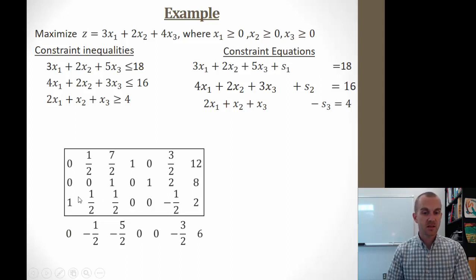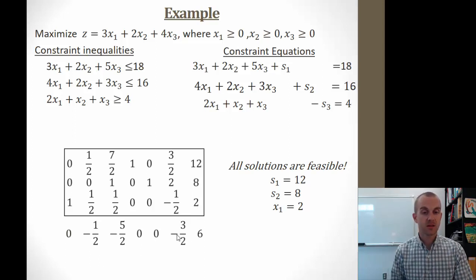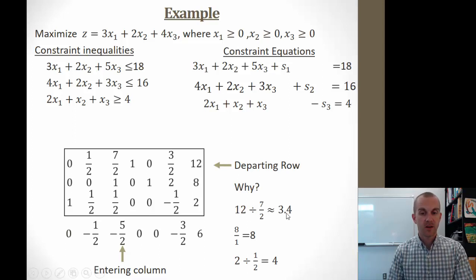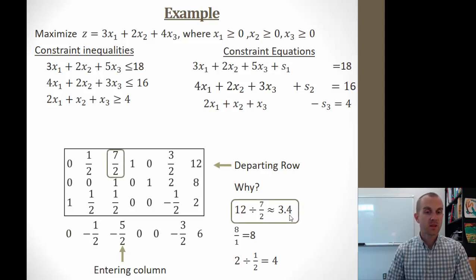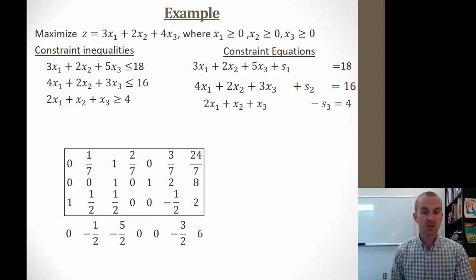Now I can check my solutions and see that in all cases I have a feasible solution: s₁ is positive 12, s₂ is positive 8, and x₁ is positive 2. However, I still have negative values in the bottom row, so I need to continue the simplex method. I pick my entering column — the greatest negative — and my departing row, which corresponds to the smallest ratio when dividing. 12 divided by 7/2 gives the smallest value, so the departing row is at the entry of 7/2.